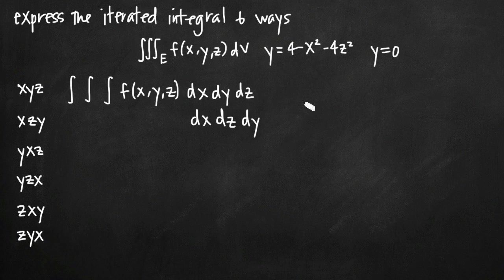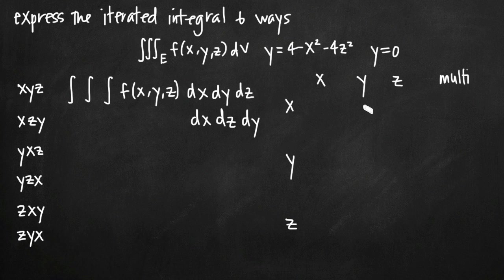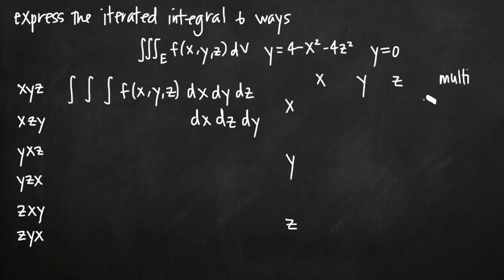The way I like to do this is to make a table. Going down the left-hand side we have x, y, z. Going across the top we also have x, y, z, plus a fourth column I'll call 'multi' — meaning multiple variables left over. In the first row for x, I want constant limits of integration; in the second column, x in terms of y; in the third column, x in terms of z; and in the multi-column, x in terms of both y and z.